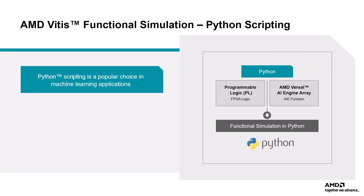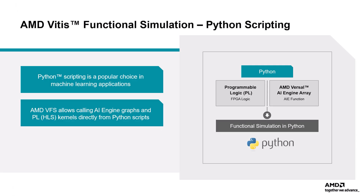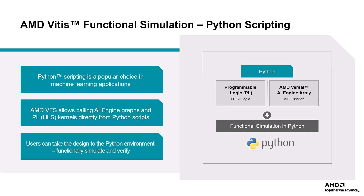Python, as a versatile programming environment with extensive libraries such as NumPy and TensorFlow, is more commonly used for machine learning applications. AMD Vitis functional simulation allows calling AI engine graphs and HLS kernels targeting the programmable logic directly from Python scripts for heterogeneous AMD Versal designs. Vitis functional simulation automatically compiles the AI engine graphs or HLS kernels from the Python interface through APIs wherever required, enabling users to simulate and verify a design from the native Python framework.